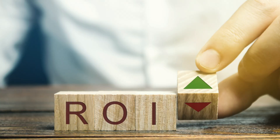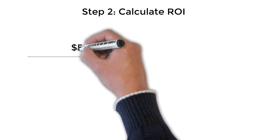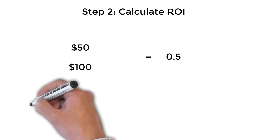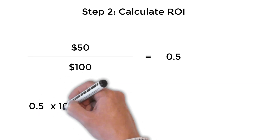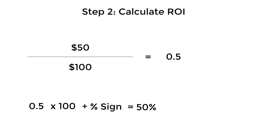But $50 is not your return on investment — ROI is a percentage number. Step two is converting your profit to a percentage, which becomes your ROI. You take your net income, your $50 profit, and divide it by the purchase price of $100, which gives you 0.5. Multiply that times 100 and add a percentage sign, and you have 50%. So your ROI on an investment bought for $100 and sold for $150 is 50%.